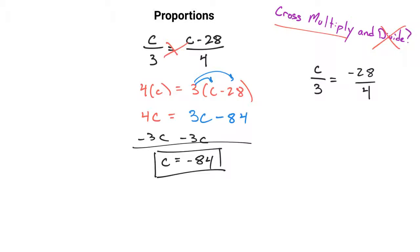So for an example where this was your proportion, then cross-multiply and divide would work, because there isn't another c in the equation like we had in our original problem.